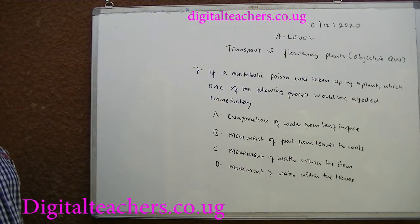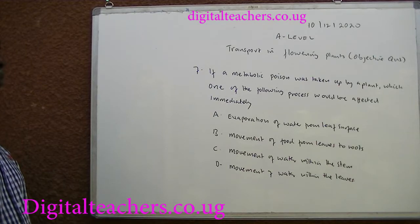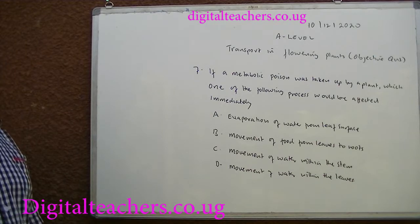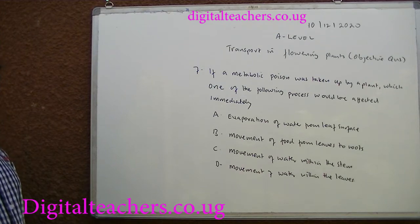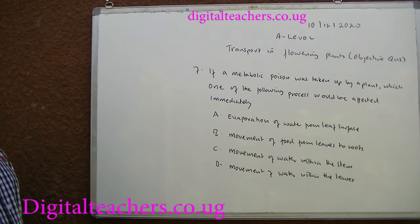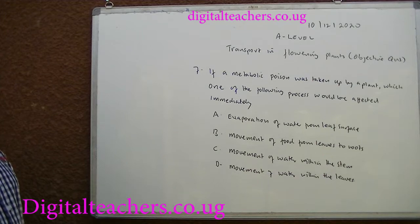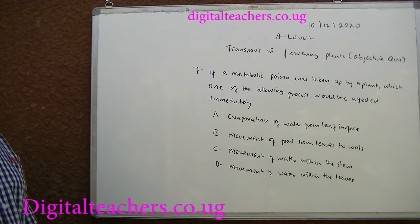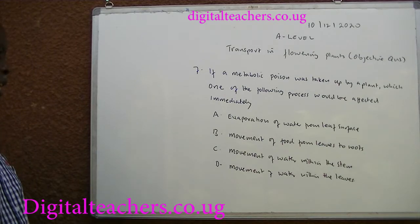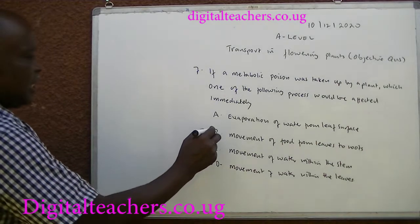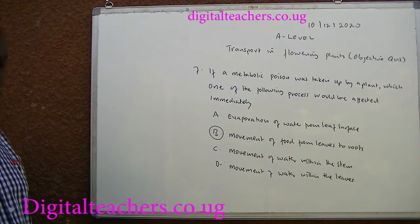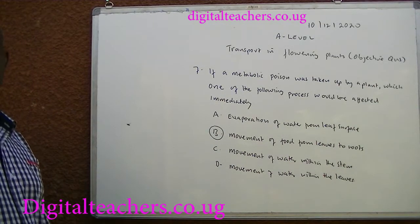Number 7. If a metabolic poison was taken up by a plant, which one of the following processes would be affected immediately? A. Evaporation of water from leaves. B. Movement of food from leaves to plants. C. Movement of water within the stem. D. Movement of water within the leaves. You can pause and answer. The answer is B. Movement of food is an active process.